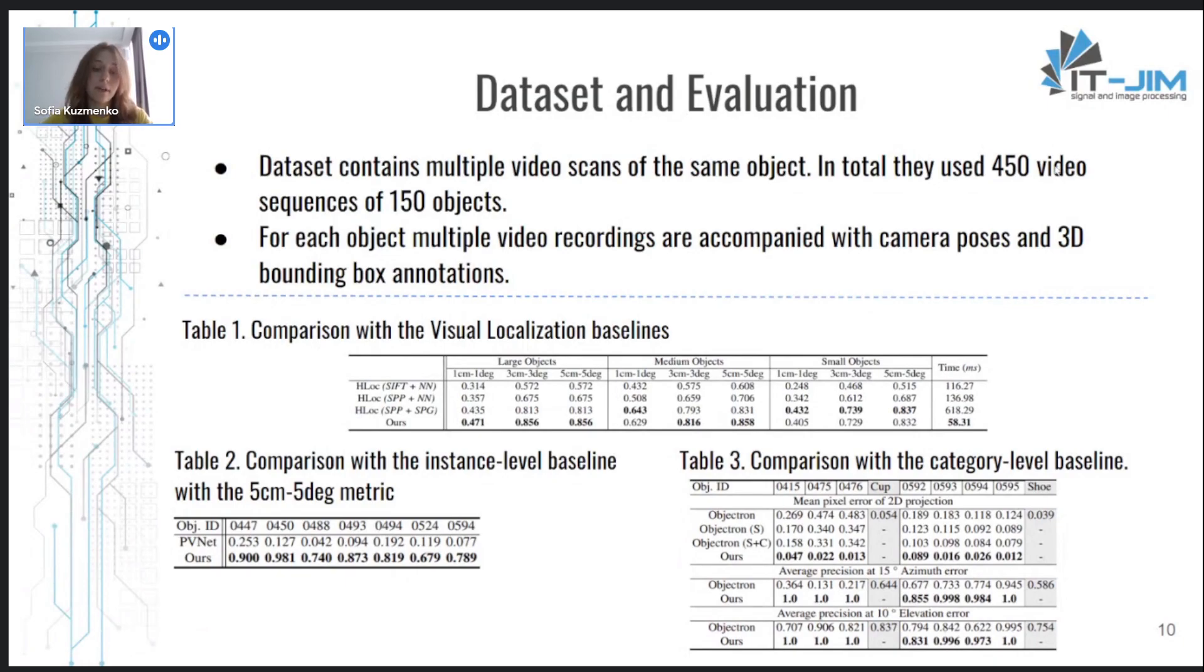And during evaluation, they compared this OnePose method with three baseline categories. As we see, it outperforms instance and category level methods. And as for the visual localization baselines, it copes well with large and medium objects while being 10 times faster.